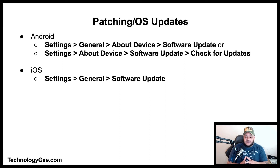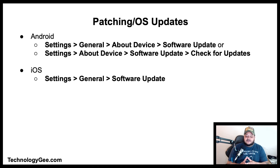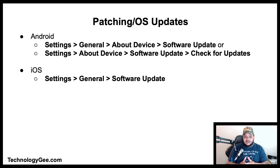Just like desktop and laptop computers, mobile devices need their applications and operating systems to be patched and updated. To manually update Android, go to Settings > General > About Device > Software Update, or Settings > About Device > Software Update, and check for updates. For iOS, tap Settings > General > Software Update.